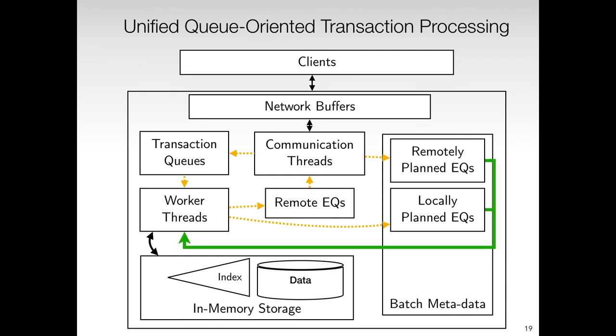Local execution queues are placed in the batch metadata in a lock-free mechanism. During the execution phase, worker threads execute transaction fragments from locally and remotely planned execution queues, while maintaining the global execution priority invariant. The batch metadata structure provides a unified abstraction for processing execution queues. The fact that an execution queue belongs to a remote planning thread is abstracted away from execution threads.